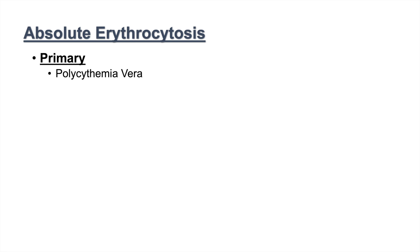With absolute erythrocytosis, we consider primary and secondary causes. The primary cause is polycythemia vera. It can be distinguished by looking at serum EPO levels — if EPO is low or normal yet red blood cell numbers are high, this suggests polycythemia vera, a condition involving inappropriate activation of red blood cell production without adequate EPO stimulation.